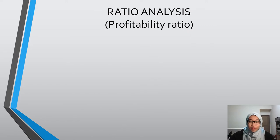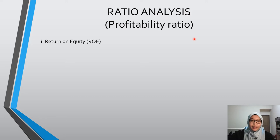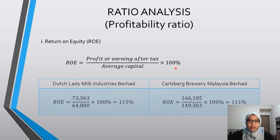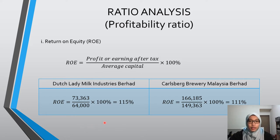I'm going to proceed with ratio analysis, starting with profitability ratio. This ratio measures the effectiveness of an organization's income in a given period of time — the higher the ratio, the better. The first measure is Return on Equity (ROE), which measures the effectiveness of capital use. The formula is profit after tax divided by average capital, times 100%. ROE for Dutch Lady is 115% while ROE for Carlsberg is 111%, meaning Dutch Lady earns more net income for each ringgit of capital compared to Carlsberg.